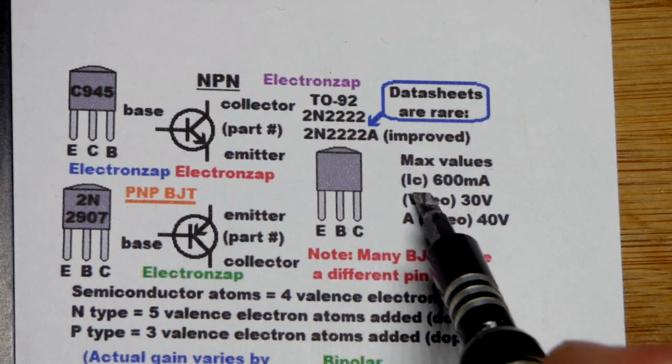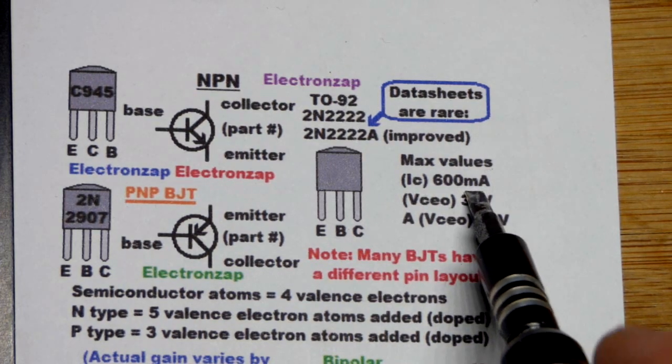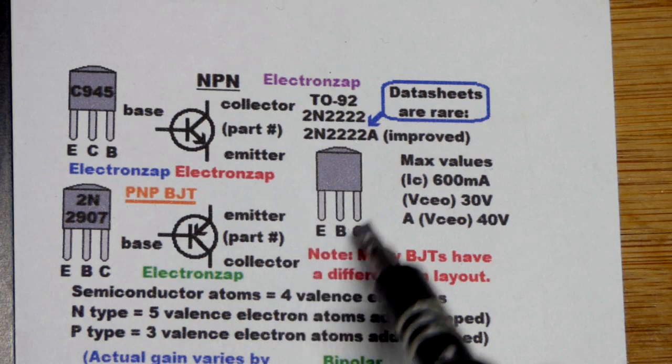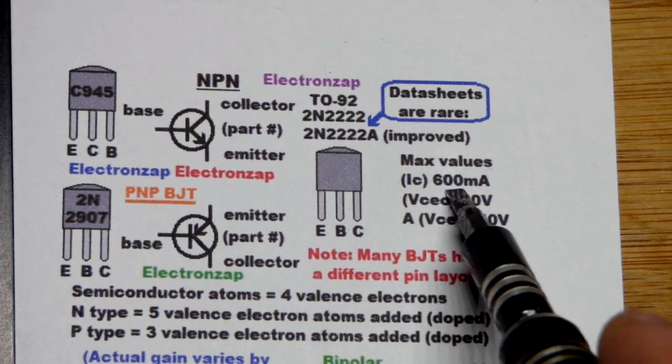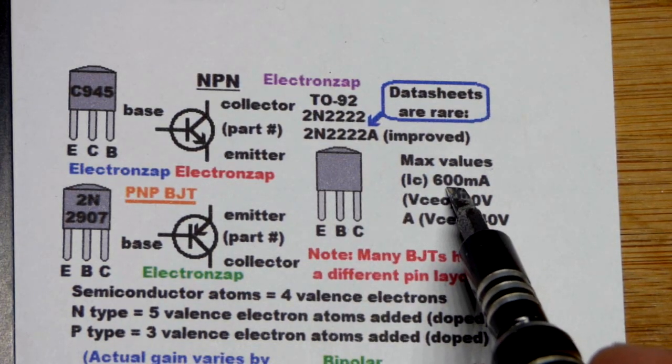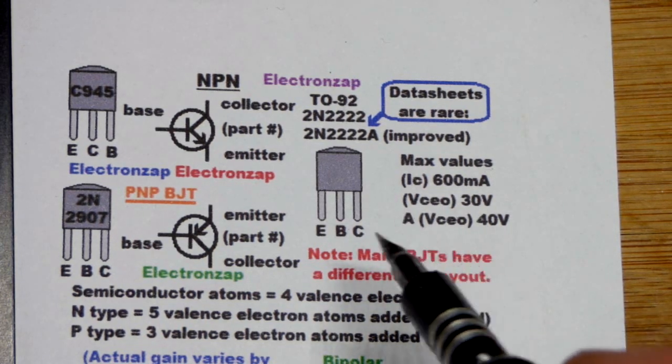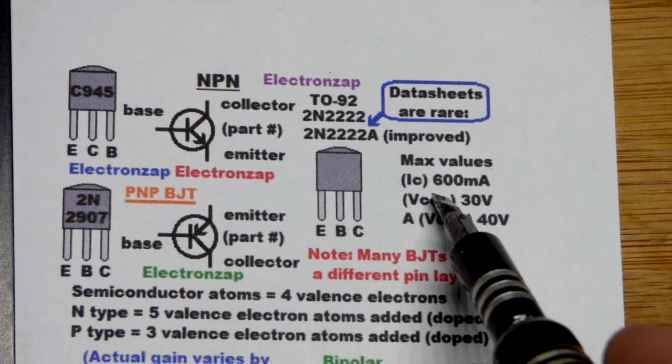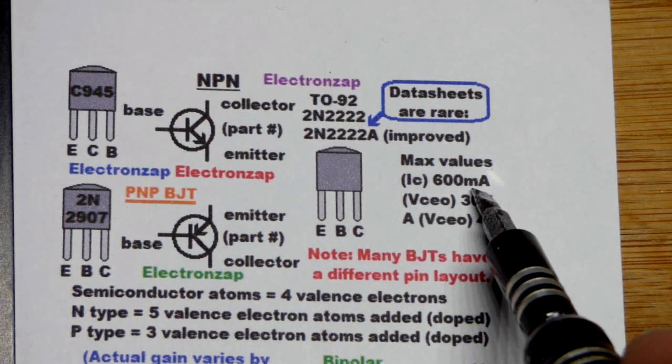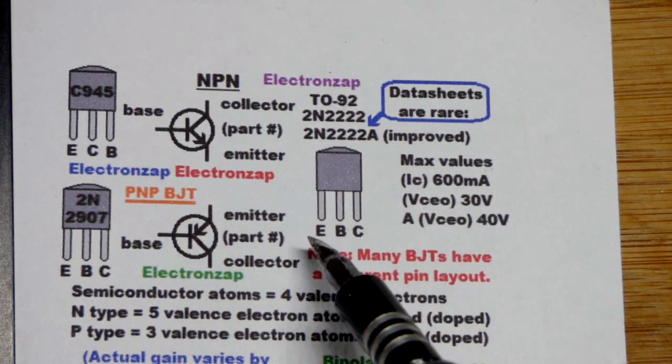It has a maximum current of about 600 milliamps. So that's going collector to emitter, which is where you apply the load. So you probably want to stay like halfway below that. But more often, I use the 2N3904, and it's also an NPN.